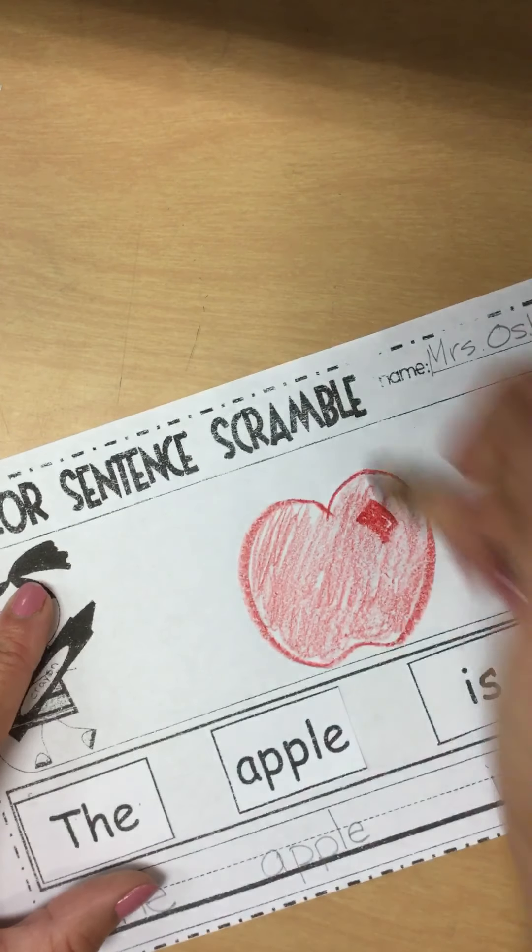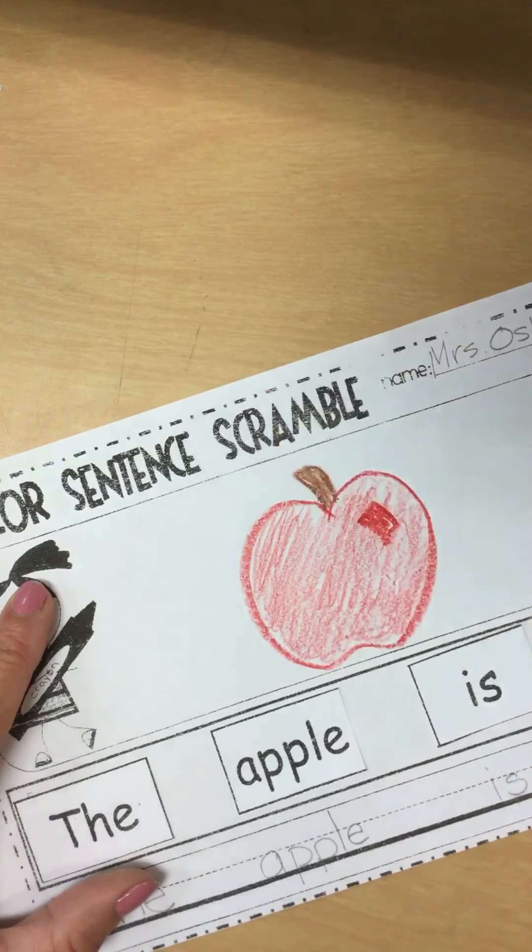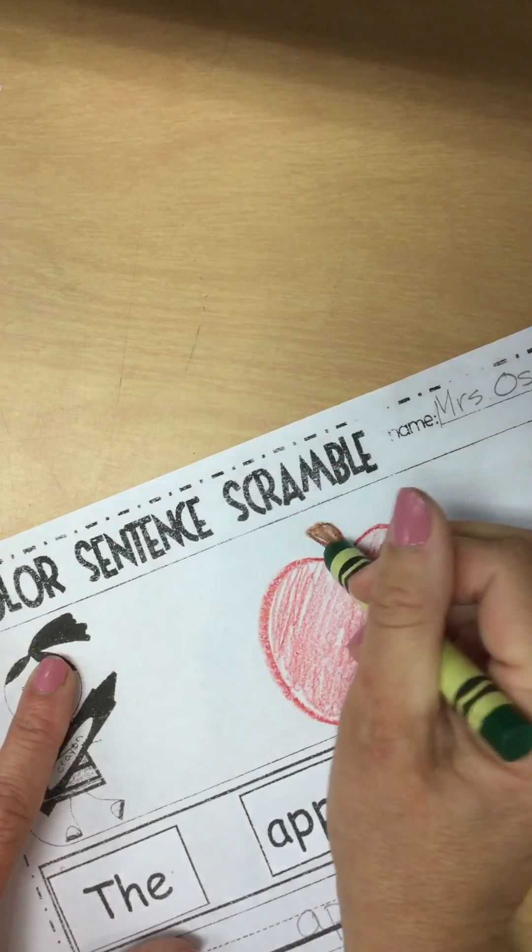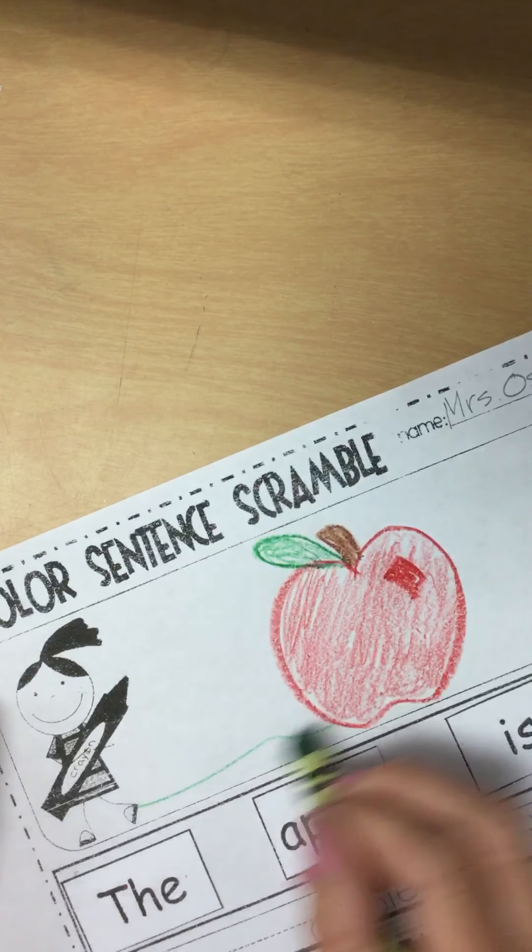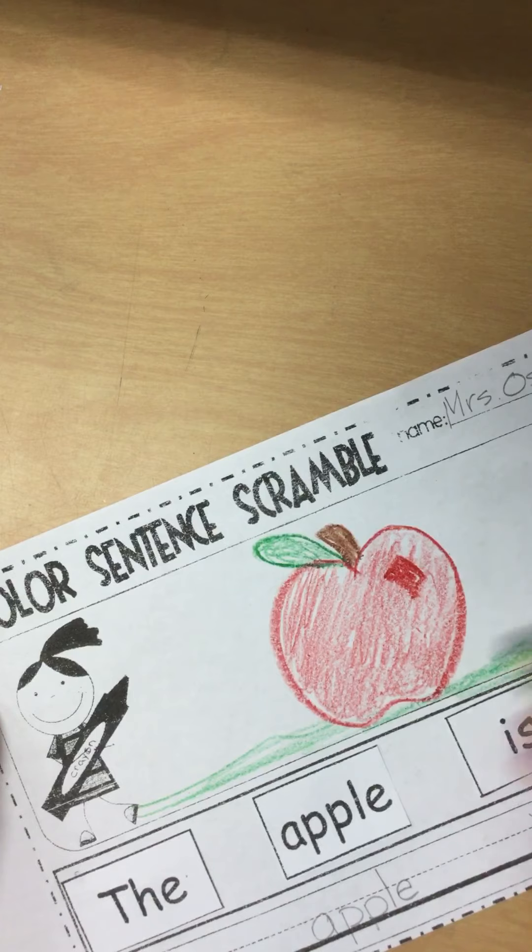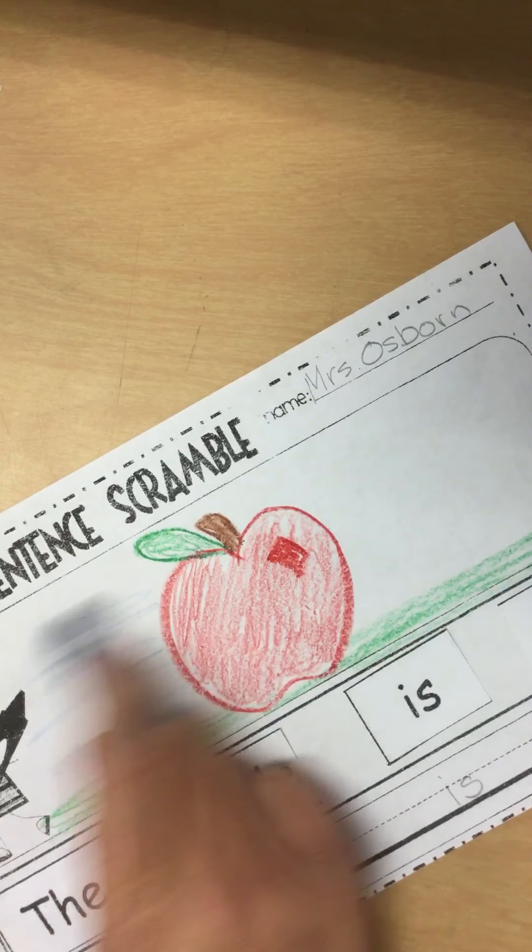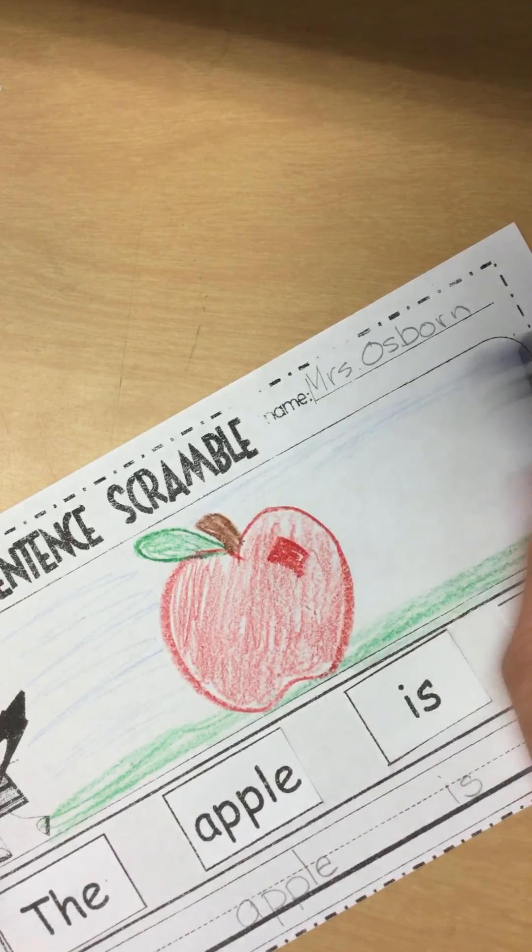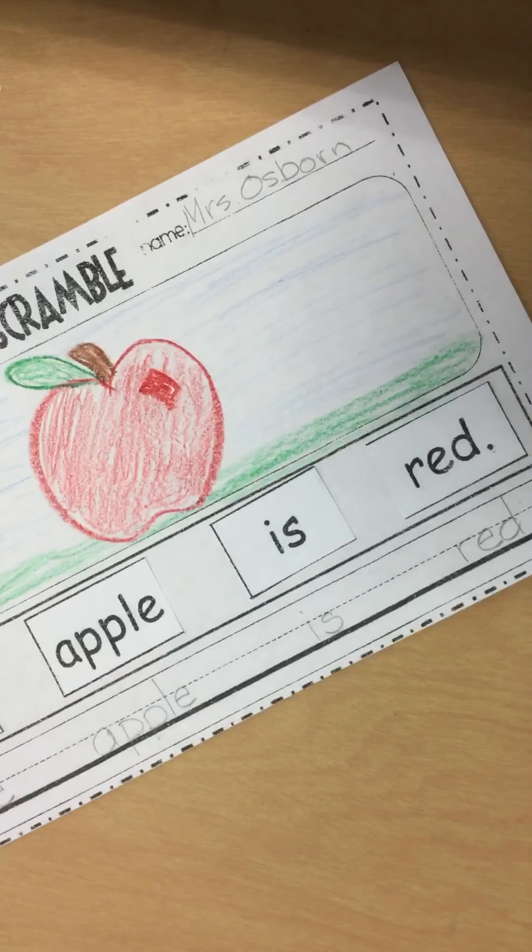And then I'm going to, of course, add a stem for my apple. I always like to use more colors. If you want to add a background of your apple sitting on the grass. My apple fell out of the tree. It's now sitting on the ground. And you can put the sky, the light blue sky. There we go. And we're done with the apple is red.